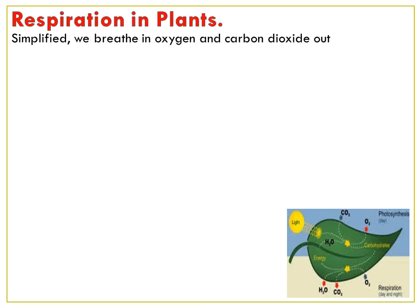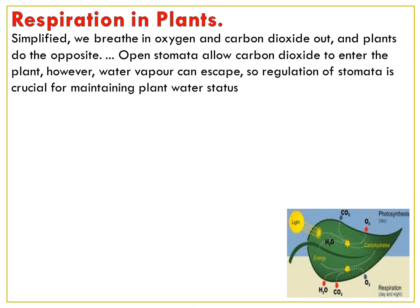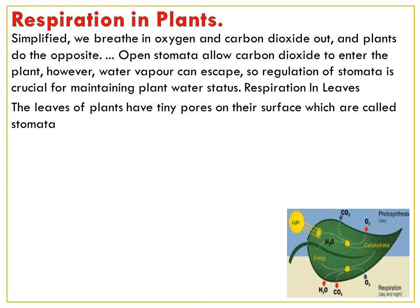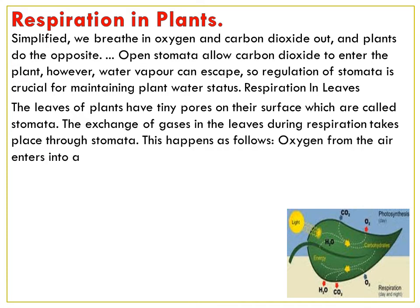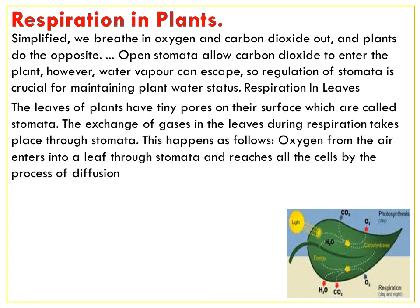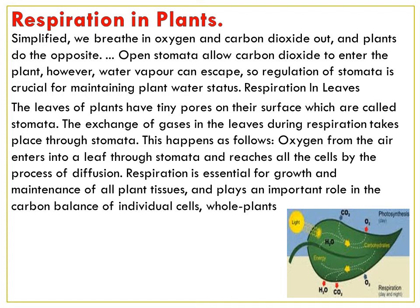Next is respiration in plants. Simplified: we breathe in oxygen and give out carbon dioxide. Plants do the opposite — they open the stomata on the leaves, which allows carbon dioxide to enter the plant. However, water vapor can escape, so regulation of stomata is crucial for maintaining the plant's water status. The leaves of plants have tiny pores on their surface called stomata. The exchange of gases during respiration takes place through the stomata. Oxygen from the air enters the leaf through stomata and reaches all cells by the process of diffusion. Respiration is essential for the growth and maintenance of all plant tissues and plays an important role in the carbon balance of individual cells, whole plants, and ecosystems.